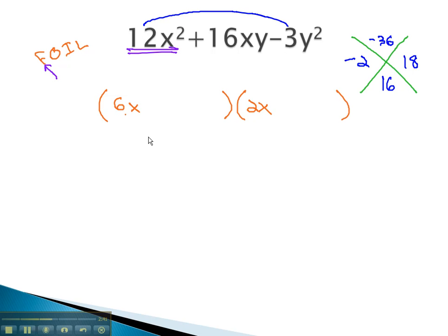Notice this time, the 6 can divide evenly into the 18, and the 2 can be factored out evenly out of the negative 2.